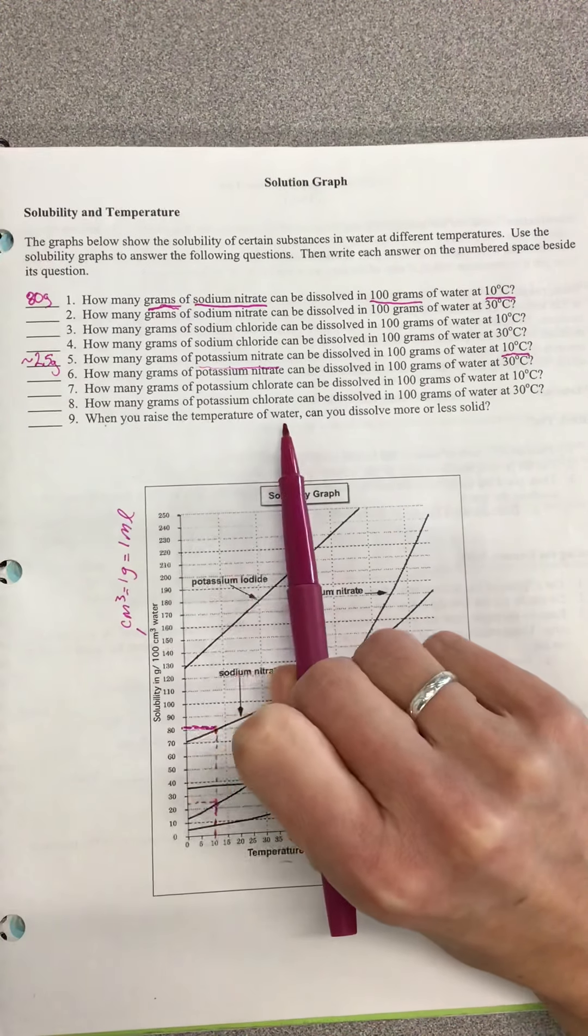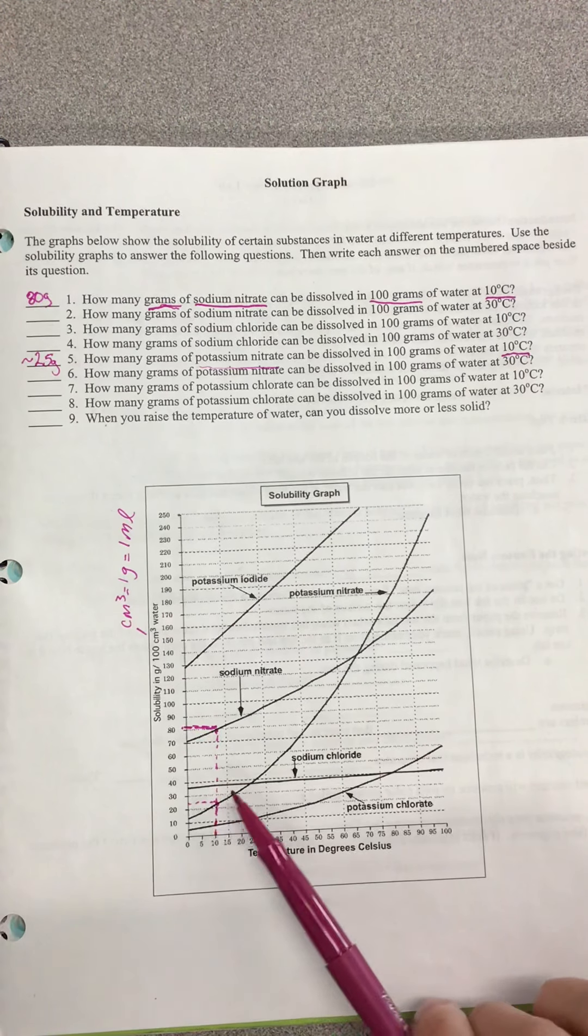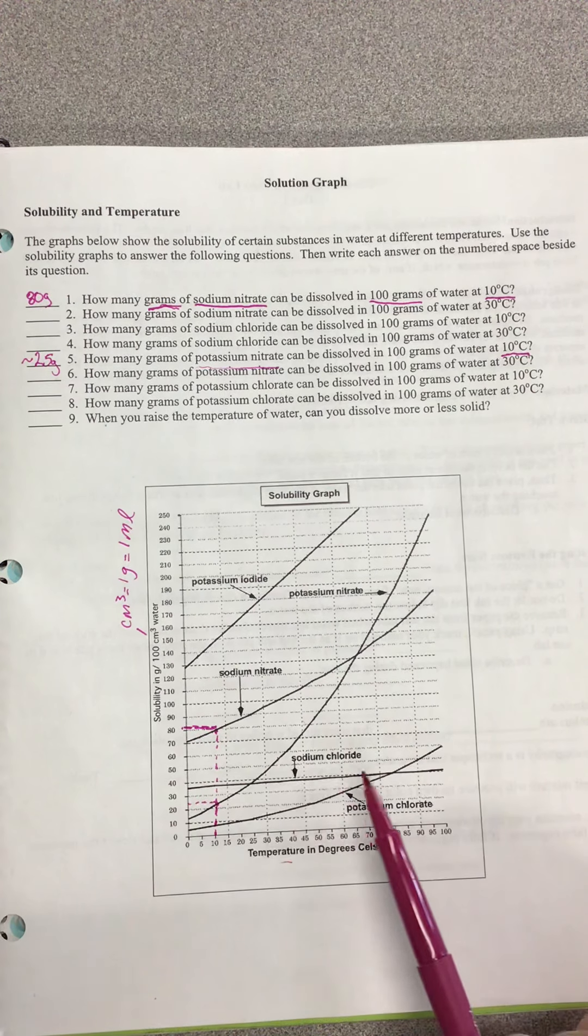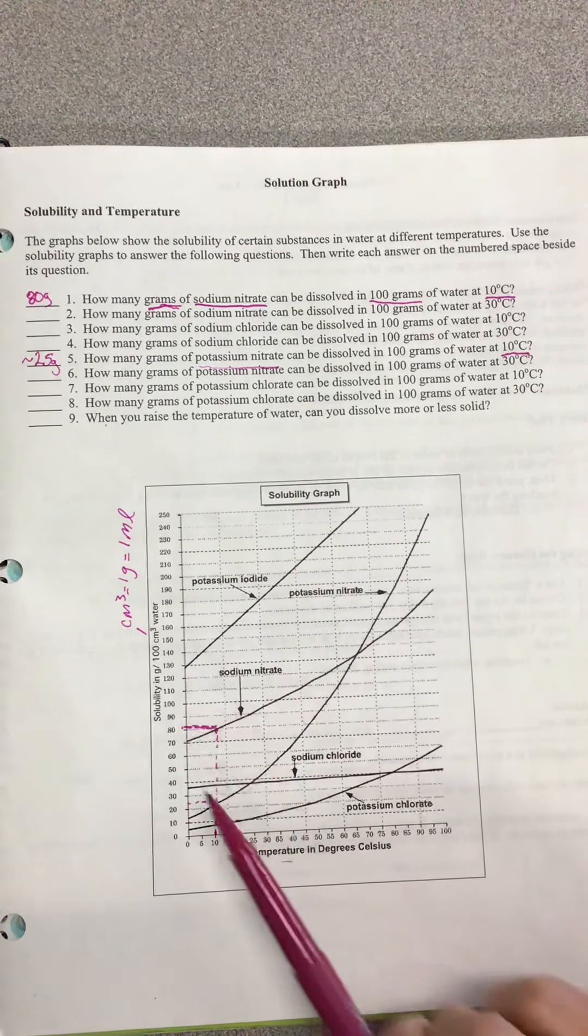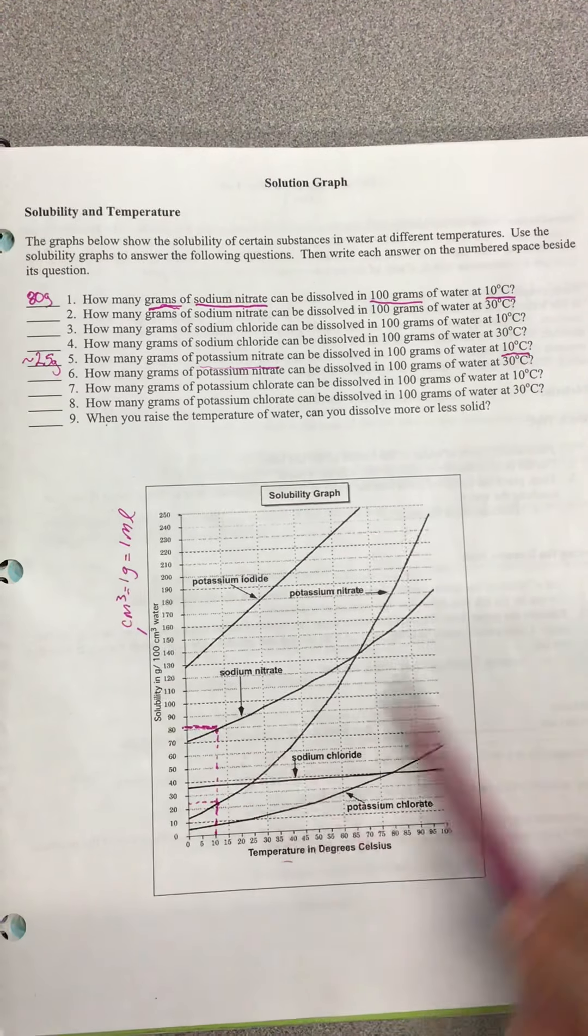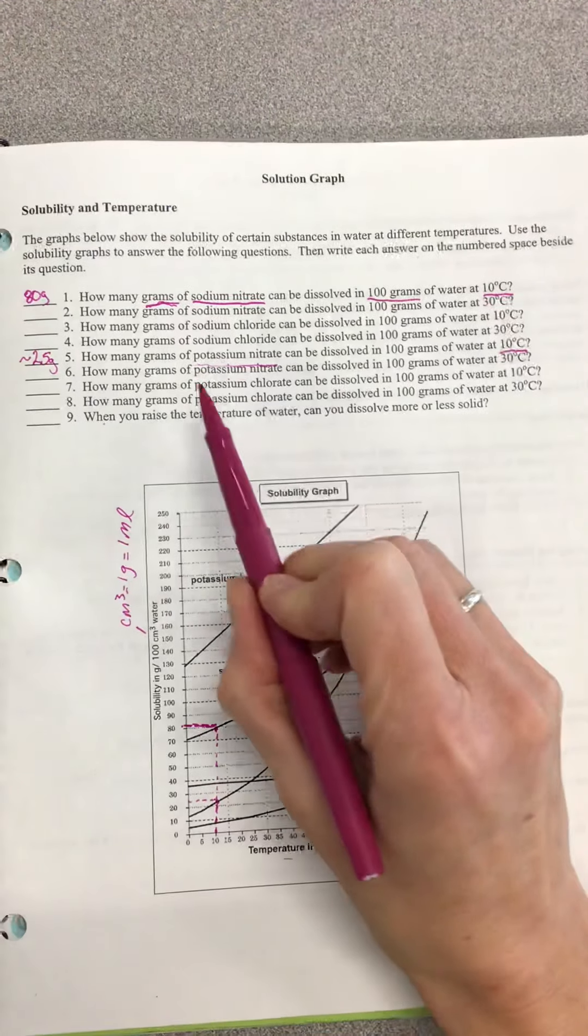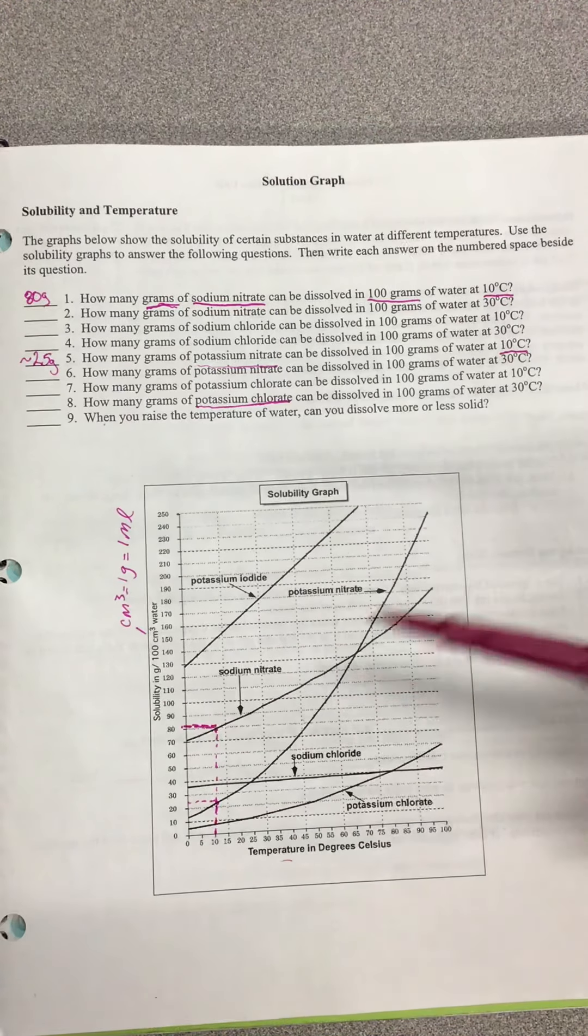Hopefully you can see—what's our pattern here? When you raise the temperature of water, can you dissolve more or less solid? What are we seeing in terms of our slopes of our graphs? Even sodium chloride, small slope as it is, we can see that as we increase our temperature, the ability to dissolve more things becomes greater.